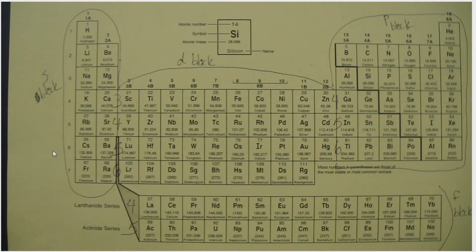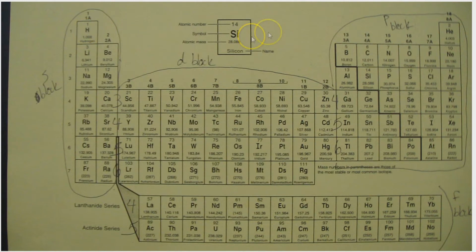Let's go through the periodic table in terms of electron configuration. Starting with hydrogen — it's in row one, the S block, and it is the first element in the S block, so hydrogen is 1s1. Then helium: the first energy level only has an S sublevel, so helium is in the first energy level S block, second element — helium is 1s2.